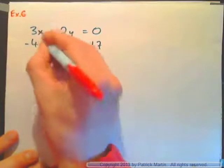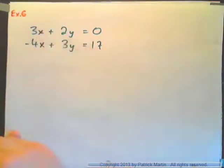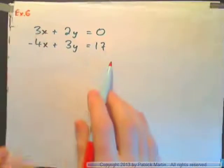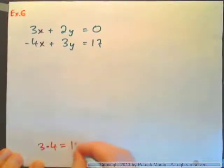I'd probably advise working on the x variables, because this is a positive term, and this is a negative term. So what are the multiples of 3 and 4? Common multiple of 3 and 4? Well, do this. What's 3 times 4? 3 times 4 is 12. So 3 and 4 both go into 12.